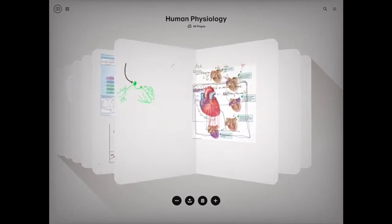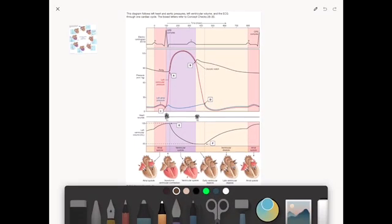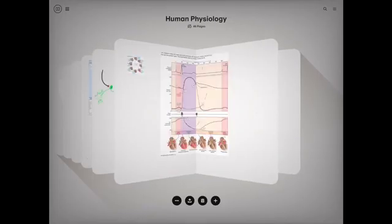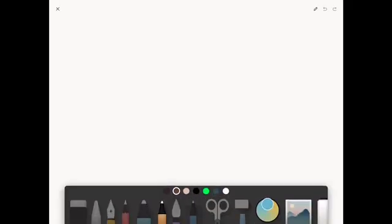Now, we talked about the Wiggers diagram as well, right here. Electrical activity, pressure, and then volume of blood in the ventricle. It goes up, comes down when it contracts. So all of that primes us to talk about cardiovascular physiology. But first, what we have to talk about is blood vessels.